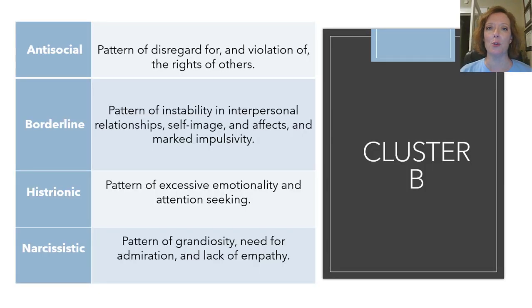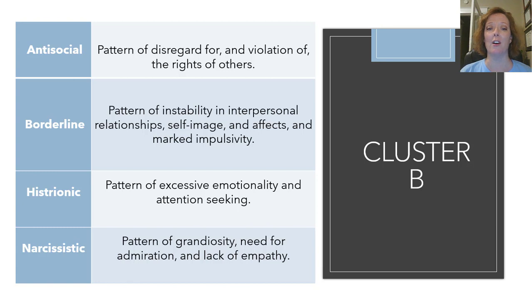In Cluster B, we have antisocial personality disorder, which involves a pattern of disregard for and violation of the rights of others — we'll come back to this one in a moment. Borderline personality disorder involves a pattern of instability in interpersonal relationships, self-image, and affect, as well as marked impulsivity. Histrionic personality disorder exhibits a pattern of excessive emotionality and attention-seeking with a lot of outbursts. Narcissistic personality disorder involves a pattern of grandiosity, the need for admiration, and a lack of empathy.